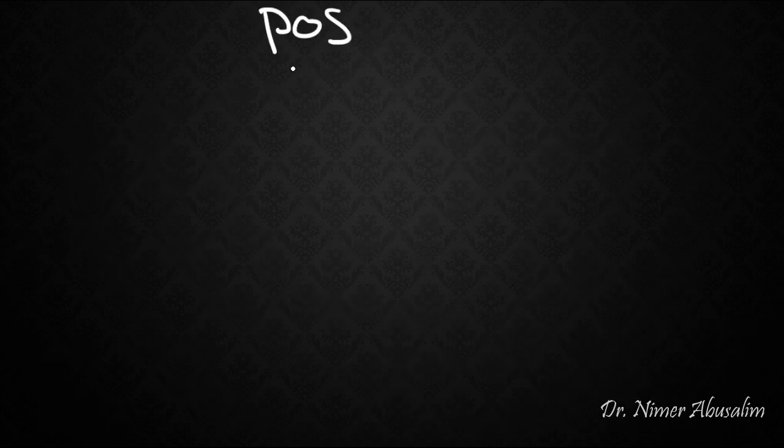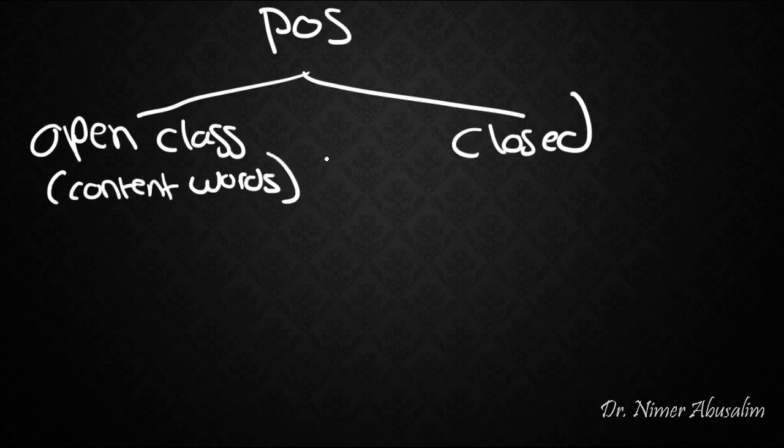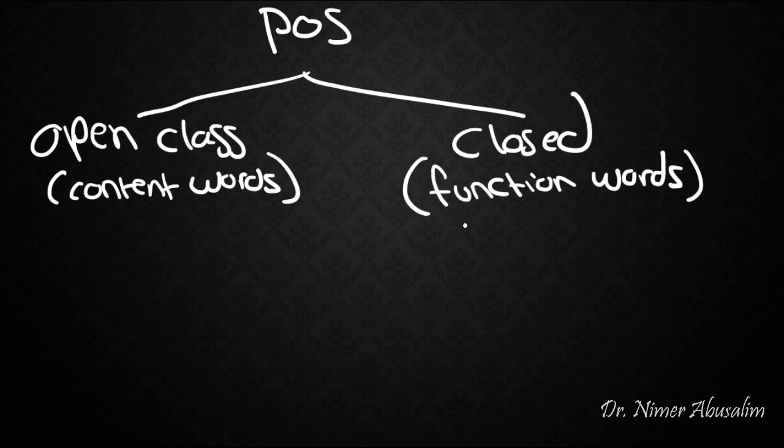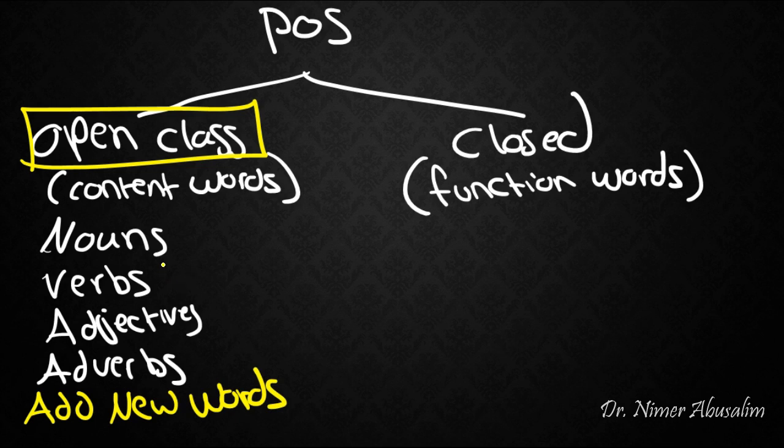Now, parts of speech can also be looked at based on whether they are part of an open class or a closed class. Open classes are usually content words, meaning words that actually have meaning or content. A closed class usually consists of function words, words that really don't have any meaning but serve a purpose in the syntax of the sentence. Examples of open classes are the nouns, verbs, adjectives, and adverbs. Now the reason why we call these an open class is because you can add new words to these classes freely. So you can invent something new and give it a new name. And by that you will have created a new noun. You can invent a new action.